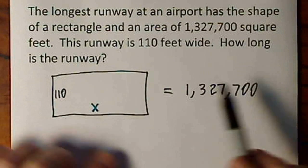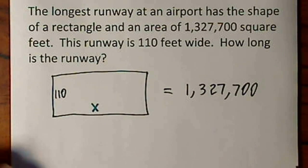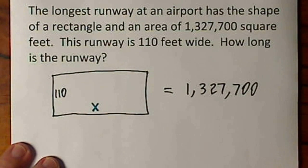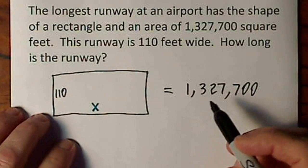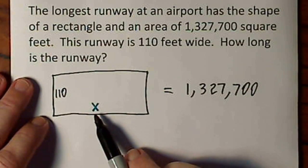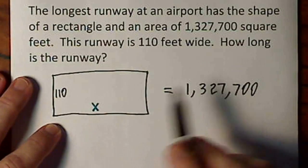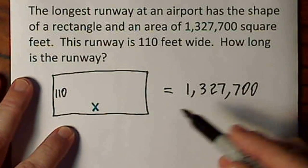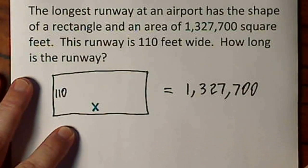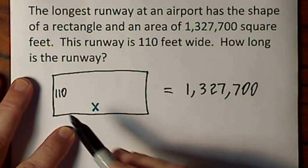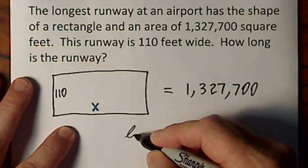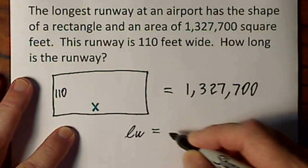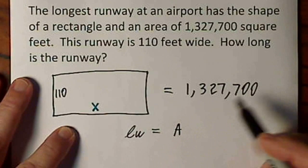These units are going to take care of themselves throughout the problem, so I'm not really going to keep writing them. We need to refer to the formula. Somehow I've got to find this length, and we'll need the formula. Usually we say for a rectangle, area is equal to length times width. But since I have my length and width over here, I'm going to say length times width is equal to area.